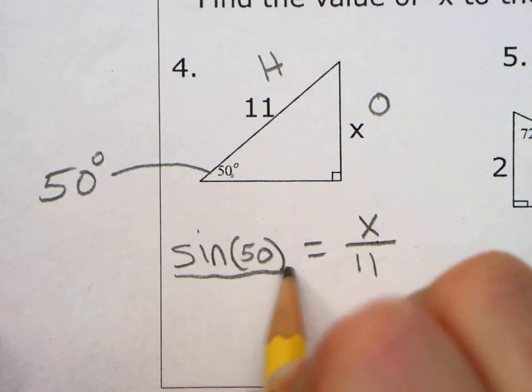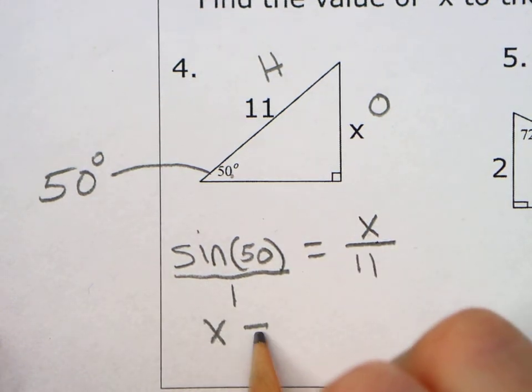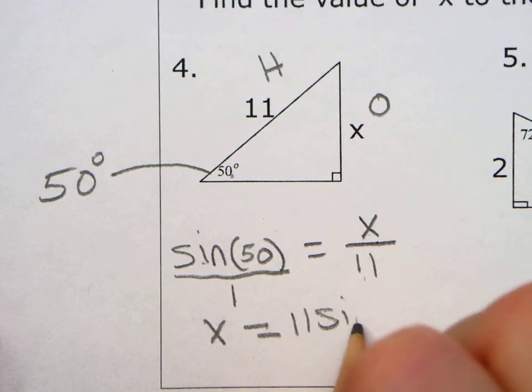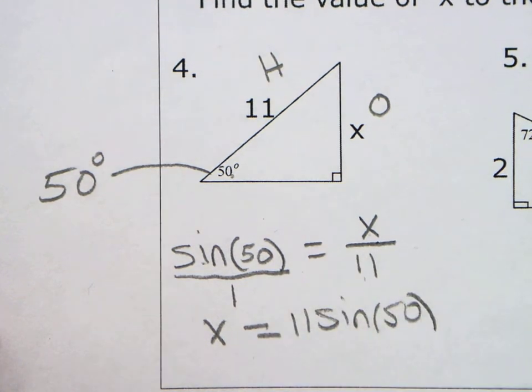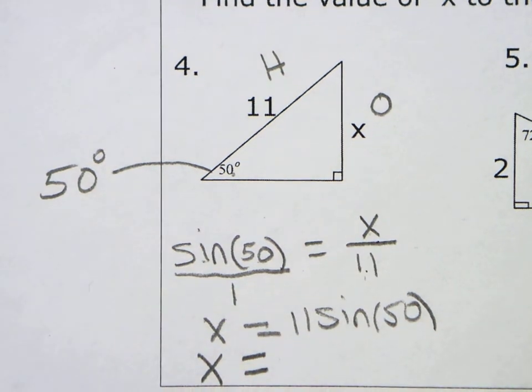Again, just cross, put it over 1 and cross multiply. 1 times X is X. Sine of 50 times 11 is just 11 sine of 50. Do not multiply the 11 times the 50. You cannot do that. The 50 is stuck inside the parentheses.